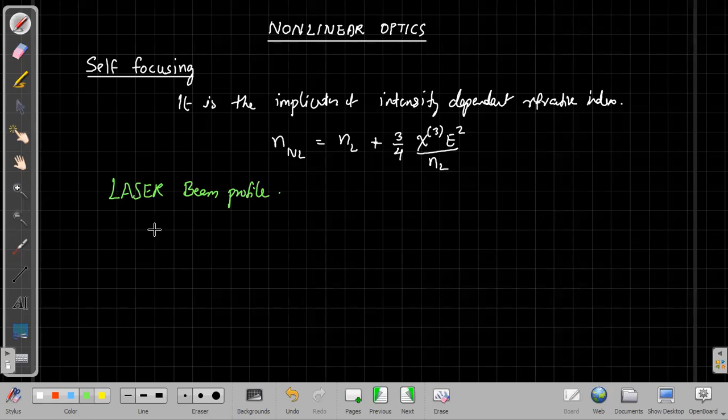So beam profile means if you take a laser. Consider a laser which is coming from the output. For example, any red color laser or any laser we have. Better be the first helium neon laser.